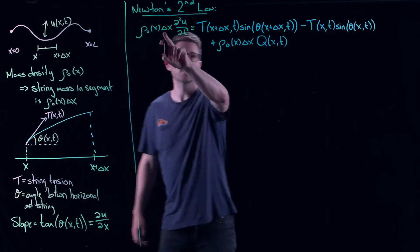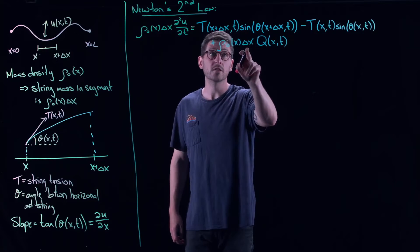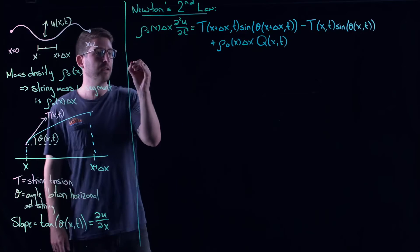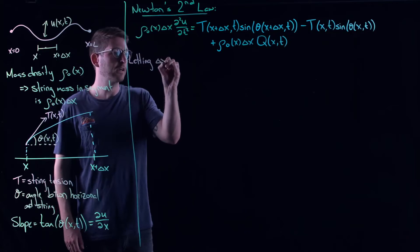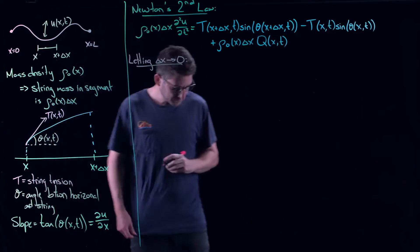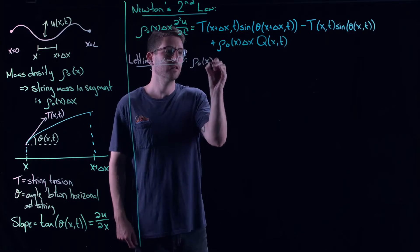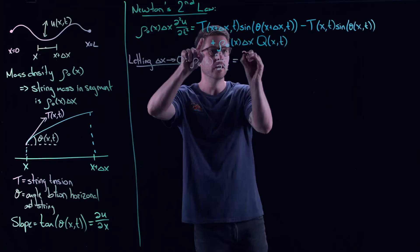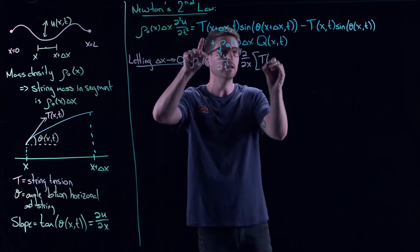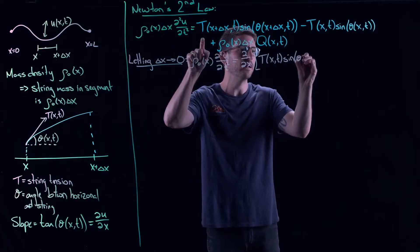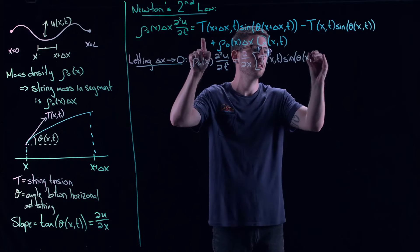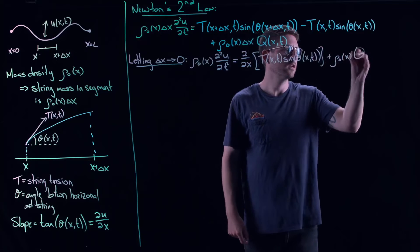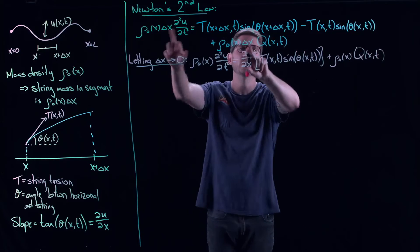Now we play the same game as with the heat equation: divide off the delta x's and let delta x go to zero. Dividing gives us a derivative directly — same approach as the heat equation. Letting delta x go to zero gives us: rho(x) times the second order time derivative of u equals the partial derivative in x of T(x, t) times sin(theta(x, t)), plus rho(x) times q(x, t). The delta x cancelled so we didn't have to worry about the limit there.